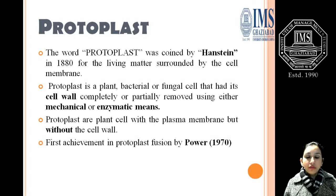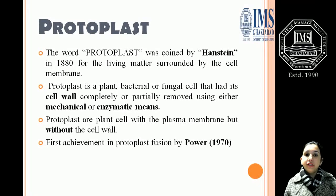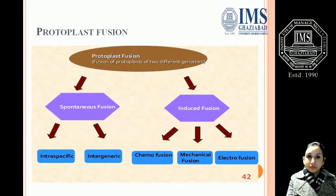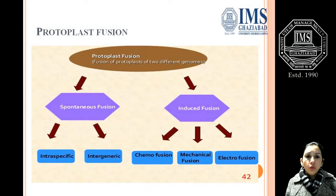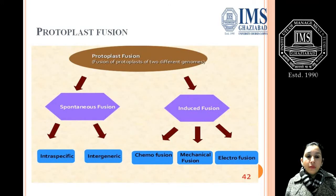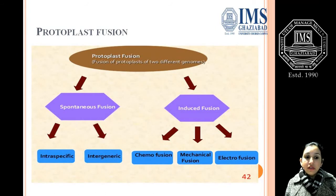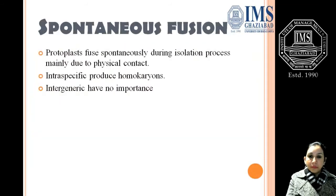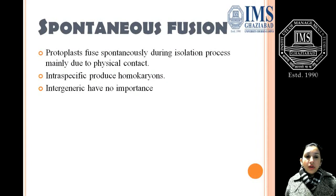Protoplast fusion was first done by Povar in 1970. There are basically two methods of protoplast fusion: one is spontaneous fusion and another is induced fusion. Under spontaneous fusion there is intraspecific and intergeneric fusion. Under induced fusion there are three methods: chemo fusion, mechanical fusion, and electro fusion.